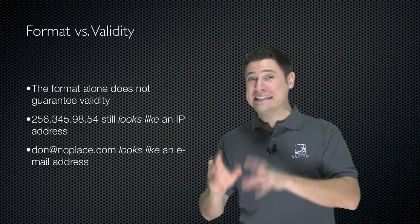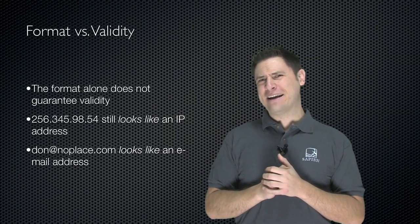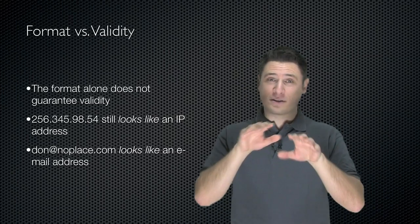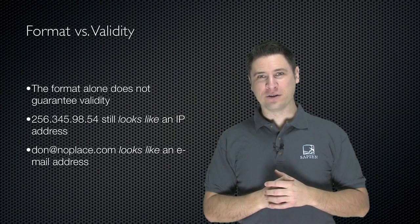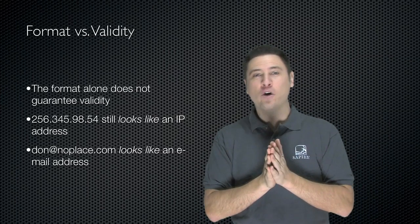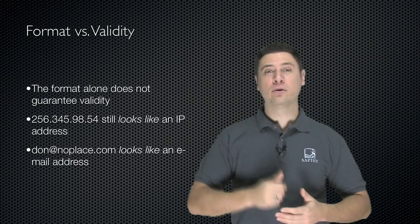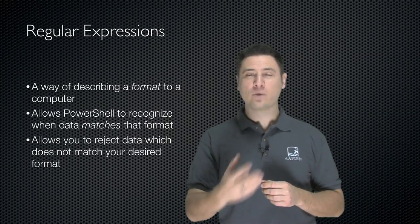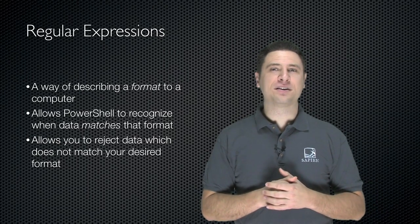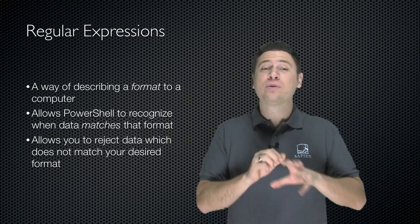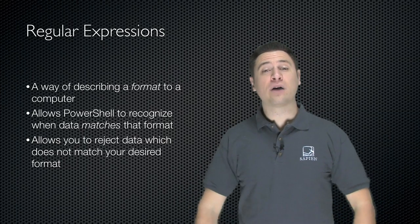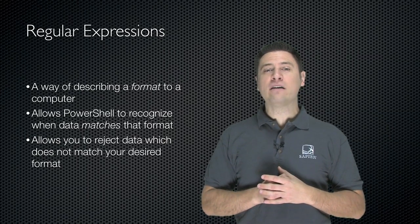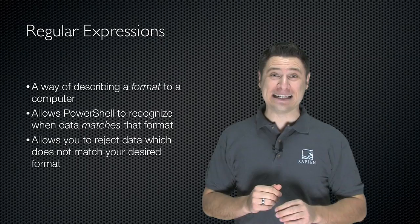There's a difference between format and validity. 256.345.98.54 looks like an IP address — it's in the right format, with four sets of digits separated by periods — but it's not a valid IP address. Don at NoPlace.com looks like an email address if you're just validating the format. Regular expressions are a way of describing formats to a computer, allowing PowerShell to recognize when data matches that format and reject data which does not. If you're writing a script that accepts an email address or username, a regular expression lets your script validate the format, if not the validity, before it continues.